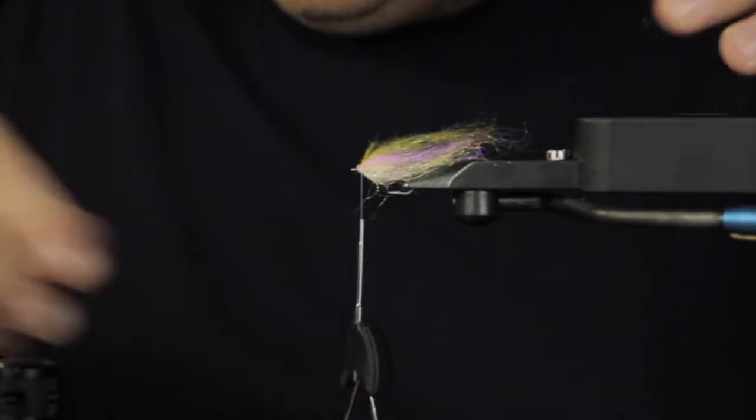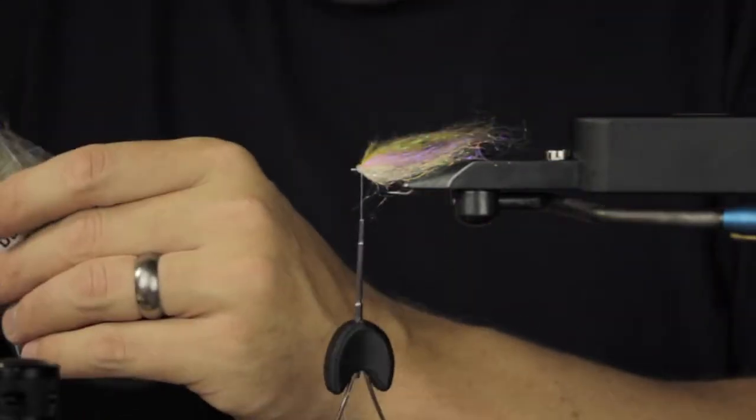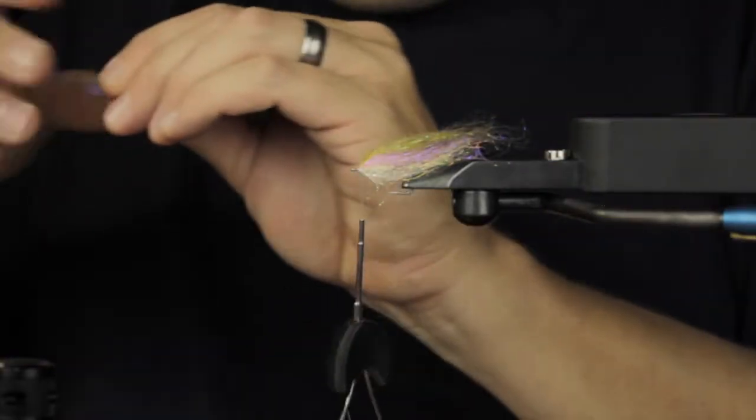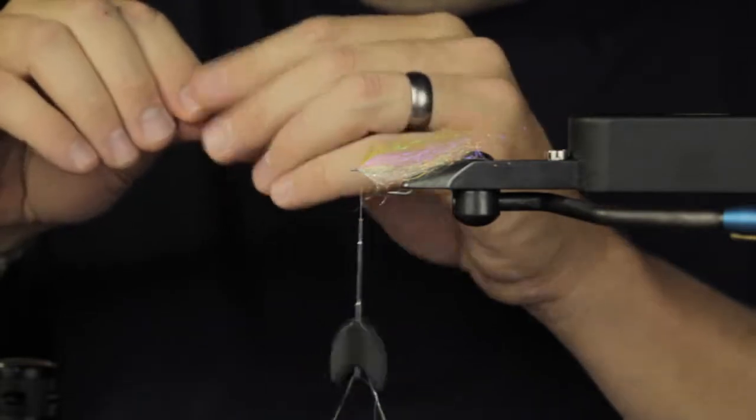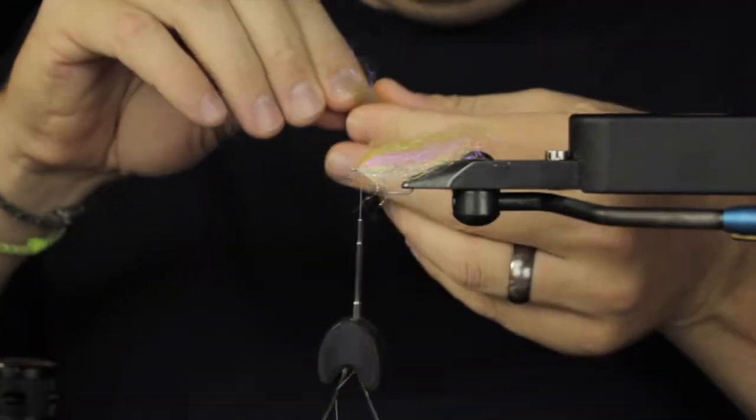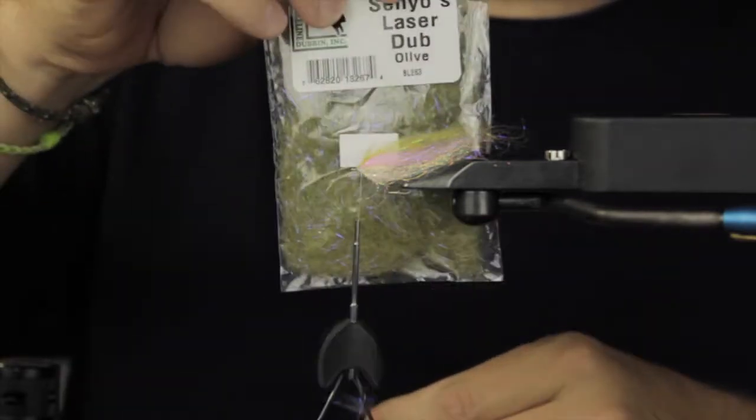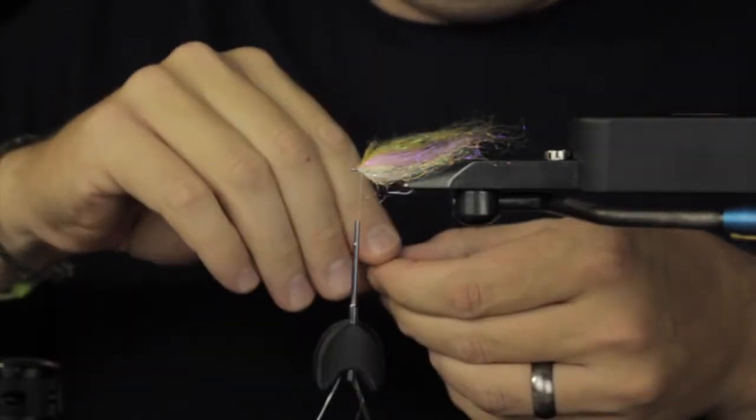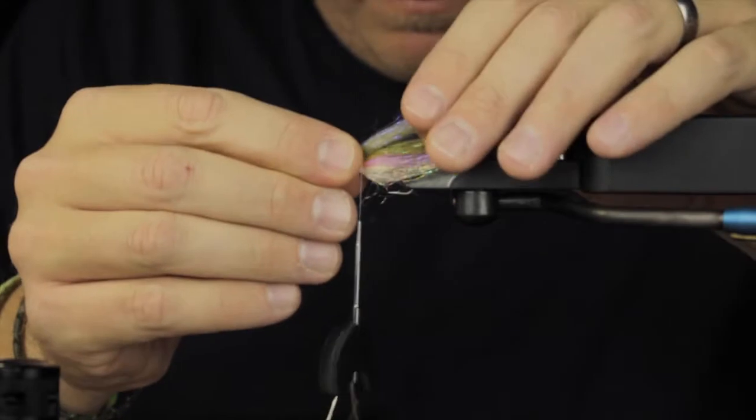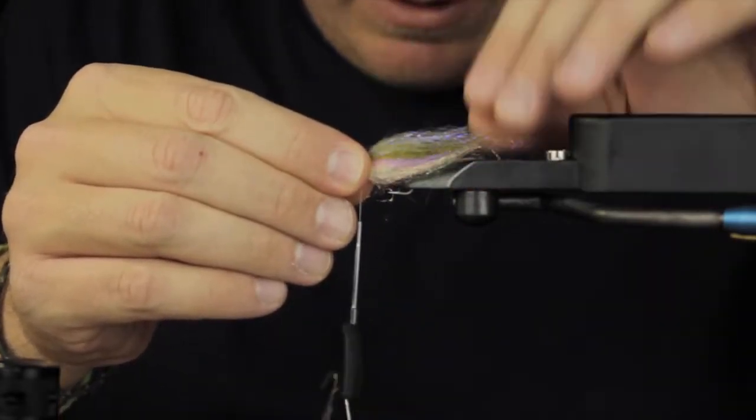Again some of it's going to pop out and for the top of our wing what we'll use is senyo's laser dub and this happens to be just a standard olive color here. So that's going to form the top of our fly.